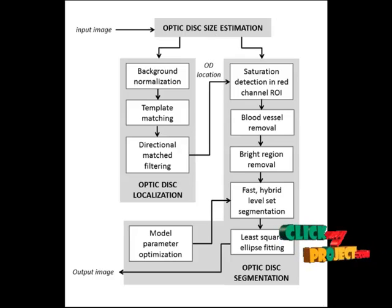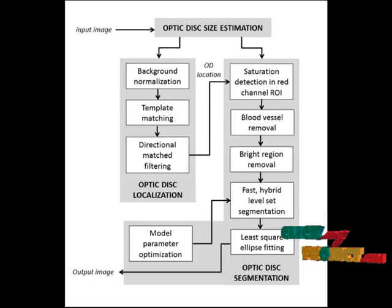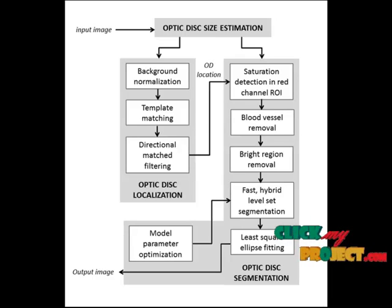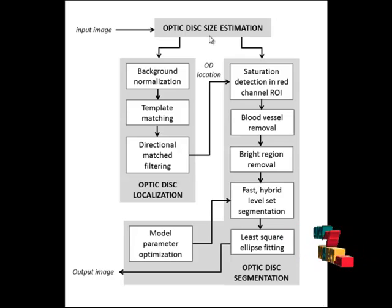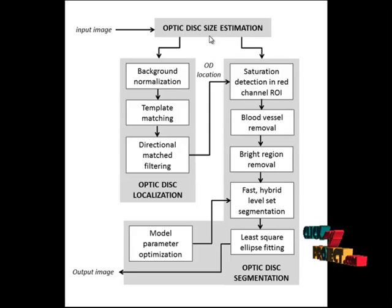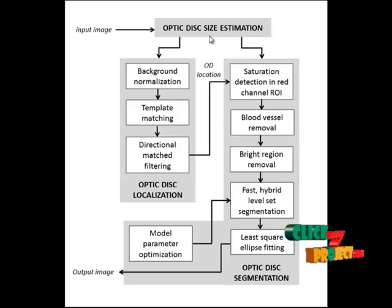Most of the research works in the literature estimate this parameter by averaging OD diameters using a subset of images. Using the field of view of the camera and image resolution, we formulated a new approach to calculate the OD size. The image footprint is calculated by finding the ratio between the area of the FOV and the number of pixels in the FOV.